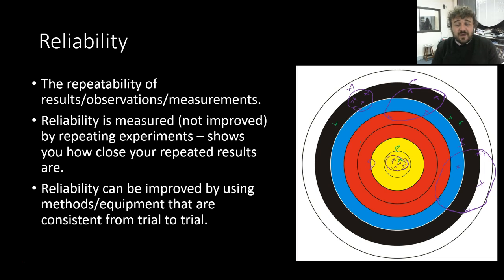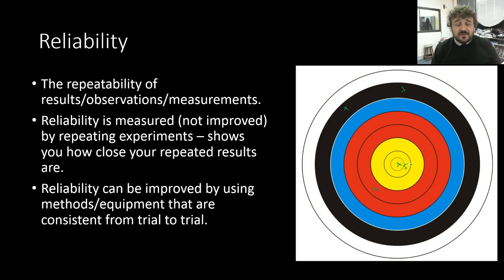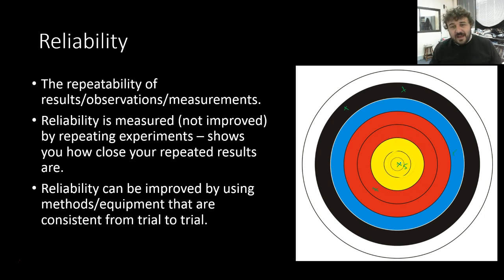You can improve reliability by using methods or equipment that are consistent from trial to trial. Our next archer's first round is scattered all over the place — it turns out they tried a different technique each time they loosed the arrow. By paying careful attention, they found the one technique that was most accurate. Then doing that same thing over and over again, their next shots are all pretty reliable. They improved their reliability by using the same technique every single time.